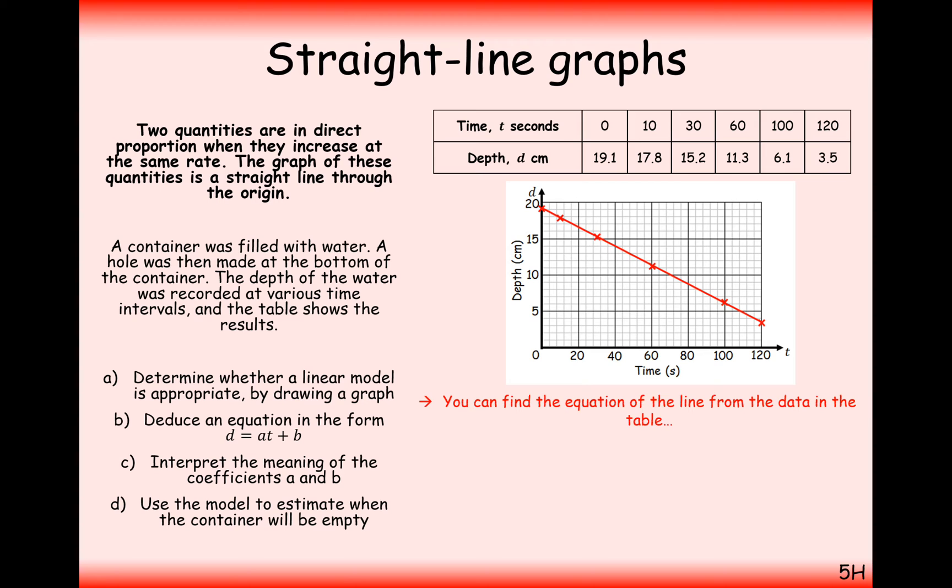Taking any two of these coordinates here, and instead of reading off the graph here, it might be a good idea to even use these coordinates that are on the graph here. So, doing a little bit of y2 minus y1 over x2 minus x1, we get 17.8 take away 19.1, divided by 10 take away 0. We're going to get a negative gradient here, which is exactly what we expect to happen. Negative 0.13.